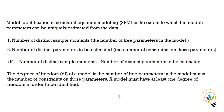As a researcher, I need to decide how many parameters I want to estimate — that is, the number of constraints I want to keep on the parameters. I decide how many covariances and estimations to calculate. The difference between the number of distinct sample moments minus the number of distinct parameters to be estimated is called the degree of freedom.